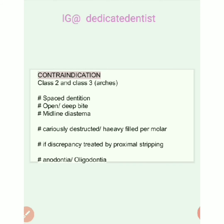Contraindications for serial extraction include: Class II and Class III cases where we usually go for expansions, spaced dentition, open bite, deep bite, diastema, if the permanent molars are carious or the patient has a high caries and plaque index, if the crowding is small enough to be treated by proximal stripping, and if teeth are missing — in cases of anodontia or oligodontia.